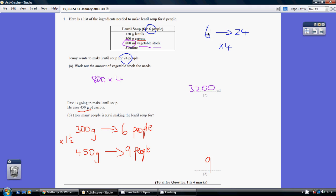So how do we scale up from 6 to 24? Well we multiply by 4. So we'd need 4 lots of all these ingredients.